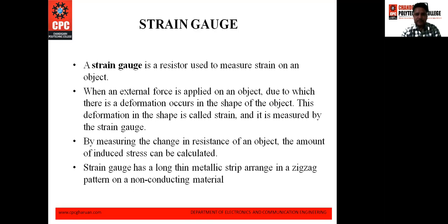Now here comes the strain gauge, which is a resistive type of transducer. As its name indicates, it is a resistor used to measure the strain on an object. When an external force is applied on an object, deformation occurs in its shape — this deformation is called strain, and it is measured by the strain gauge.